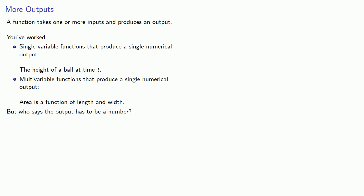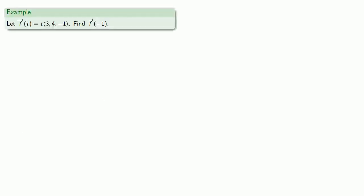So we introduce the idea of a vector-valued function: a function whose output is a vector. For example, f of t is the vector t times (3, 4, 1), and let's find f of negative 1.